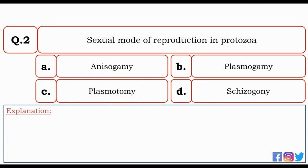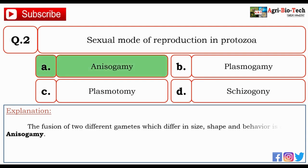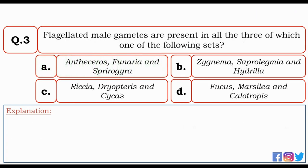A total of five nuclei take part in double fertilization, but since the two polar nuclei fuse to form one, the correct answer is four. Next question: sexual mode of reproduction in protozoa. Options: anisogamy, plasmagamy, plasmotomy, and cisogony. The correct answer is A — anisogamy. The fusion of two different gametes which differ in size, shape, and behavior is called anisogamy.